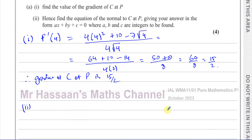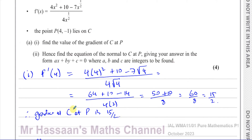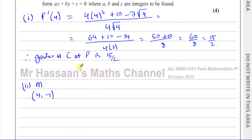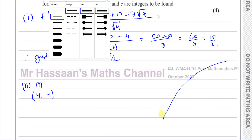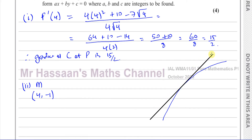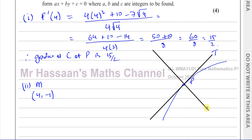We know the gradient of the curve at C is 15 over 2, and it passes through point P which is (4, −1). Let me explain what a normal means. A tangent to a curve is a line which touches the curve at a particular point. The normal to a curve goes through the same point as the tangent but cuts through the curve at 90 degrees to the tangent.